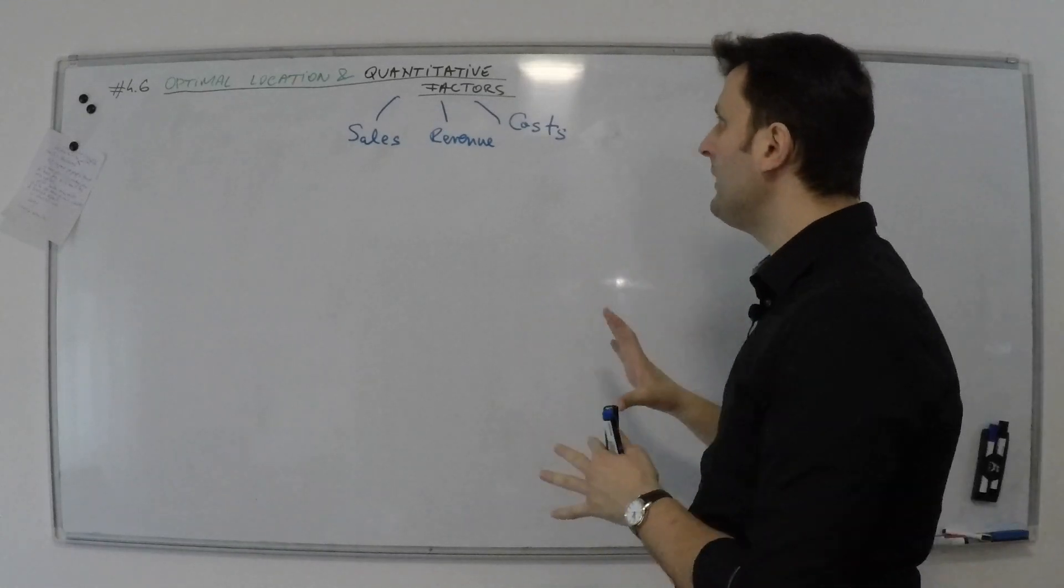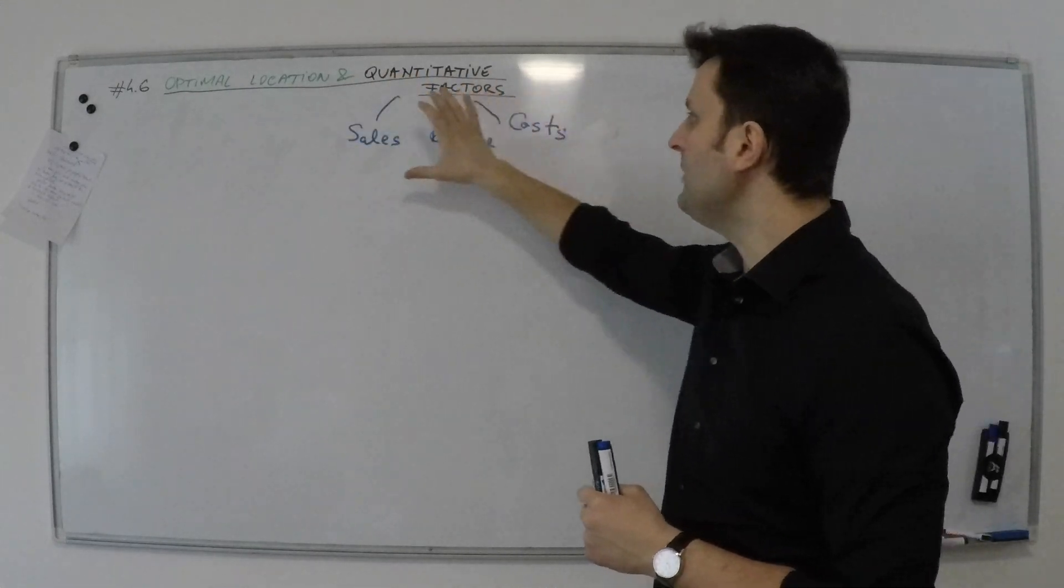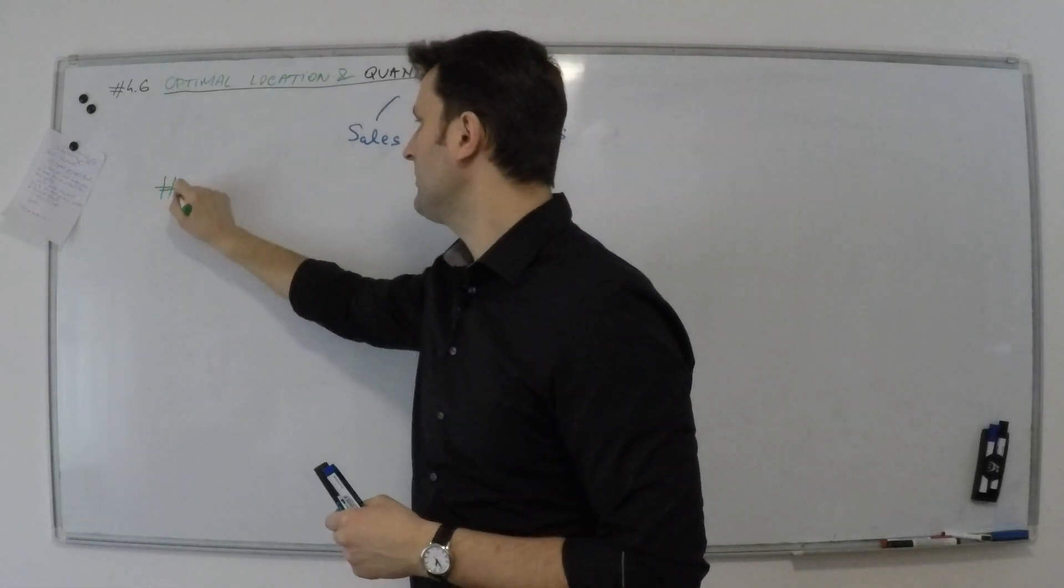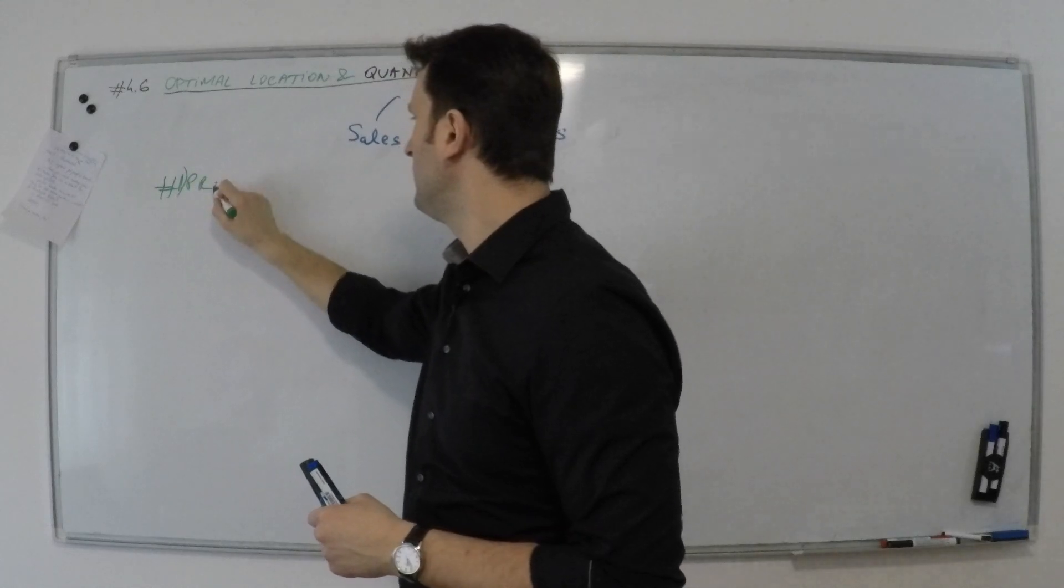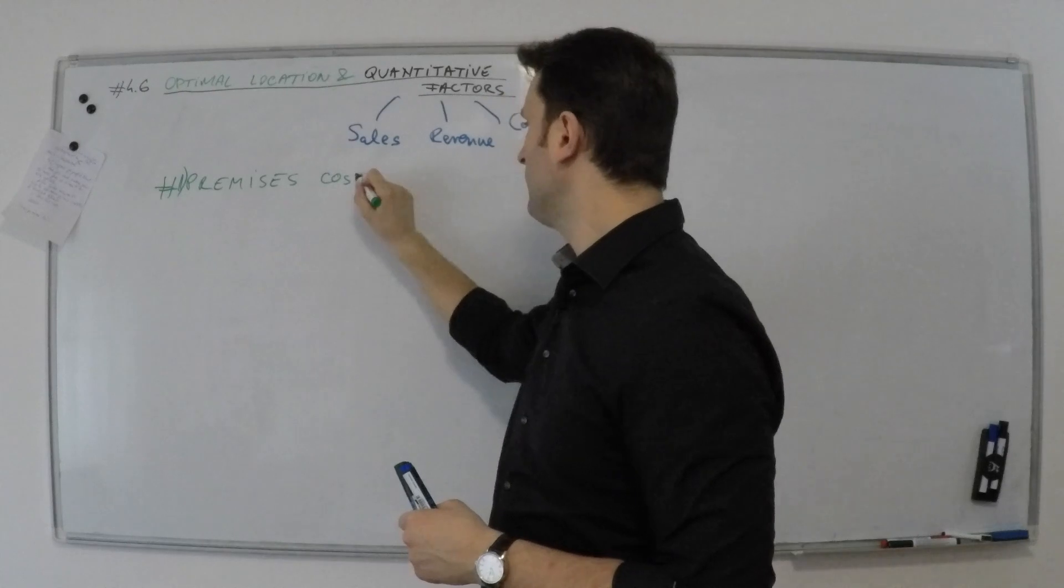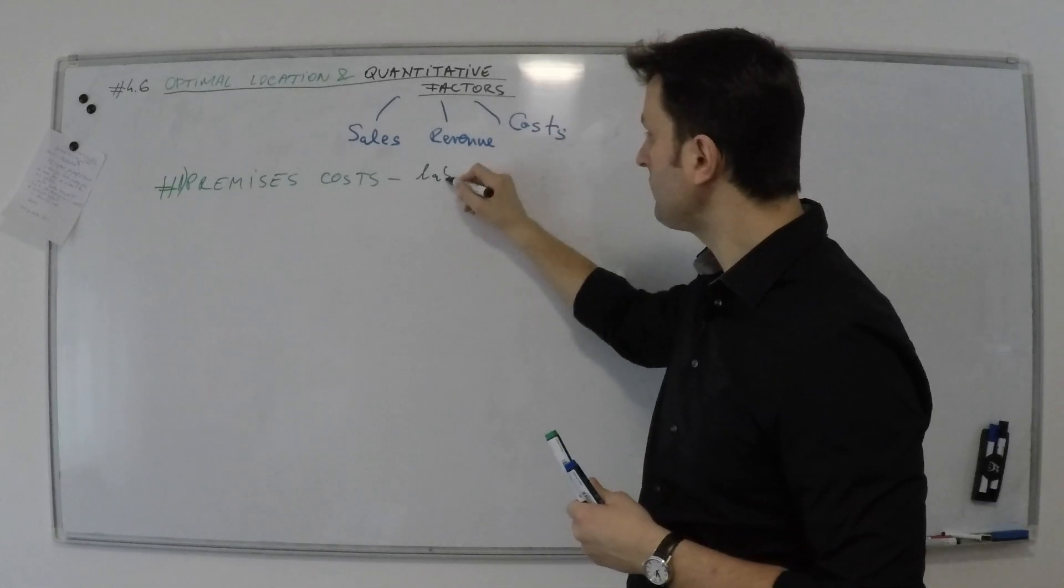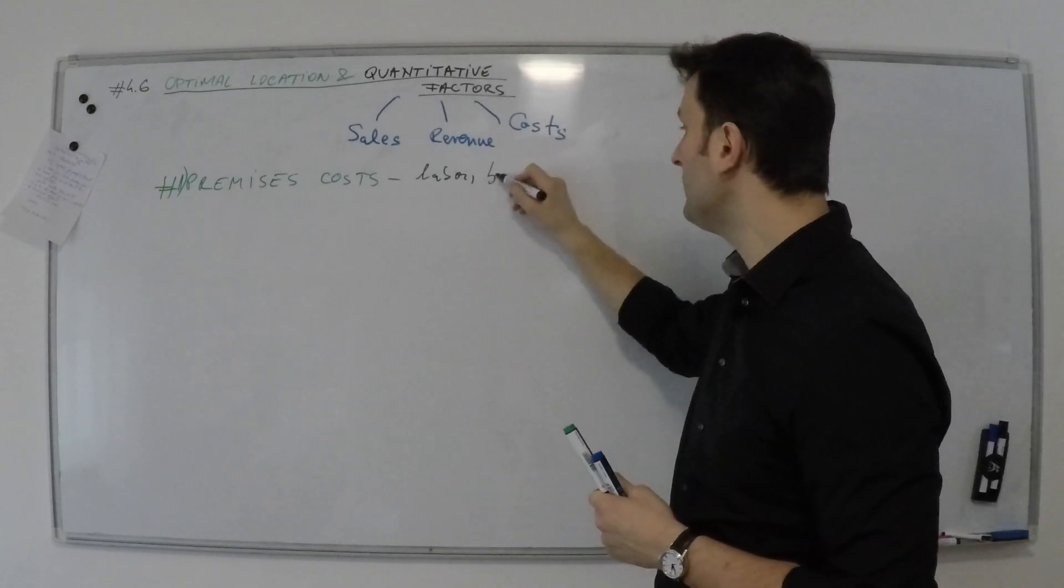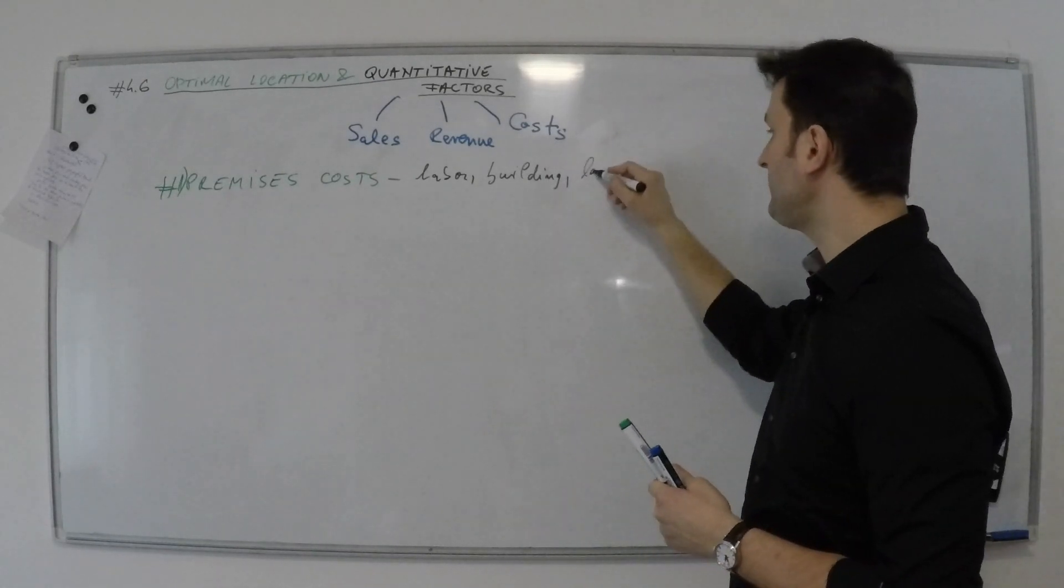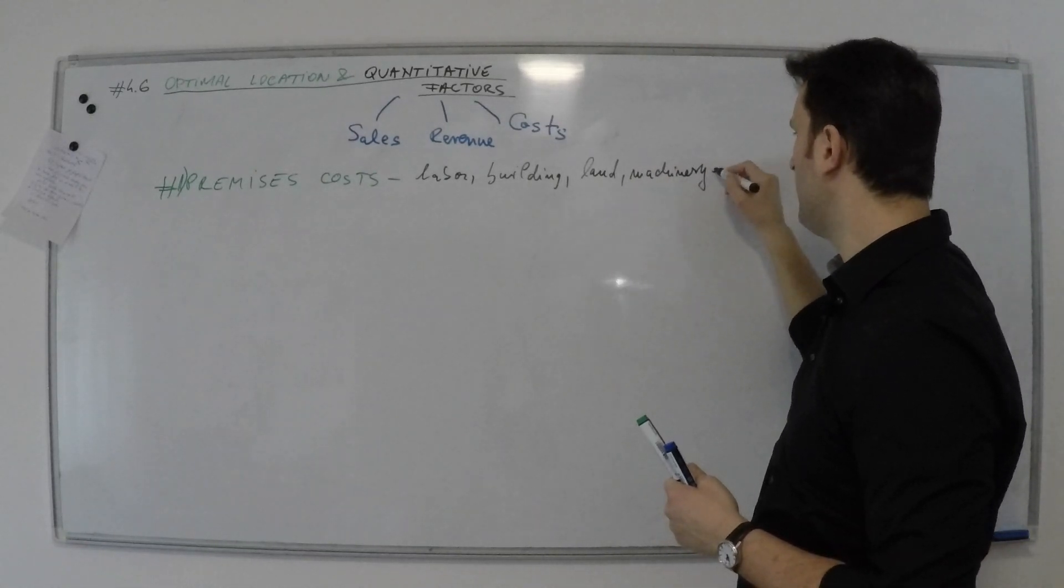The number one category of quantitative factors tightly linked to these concepts would be premises costs. I want you to think about labor, building, land, and machinery.